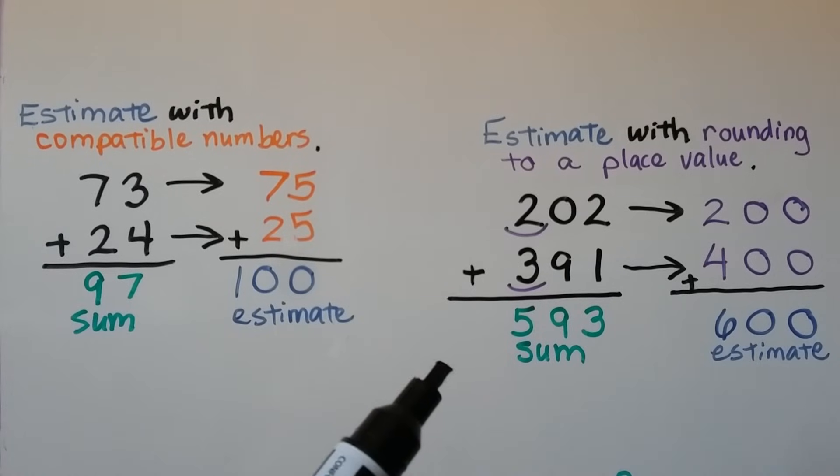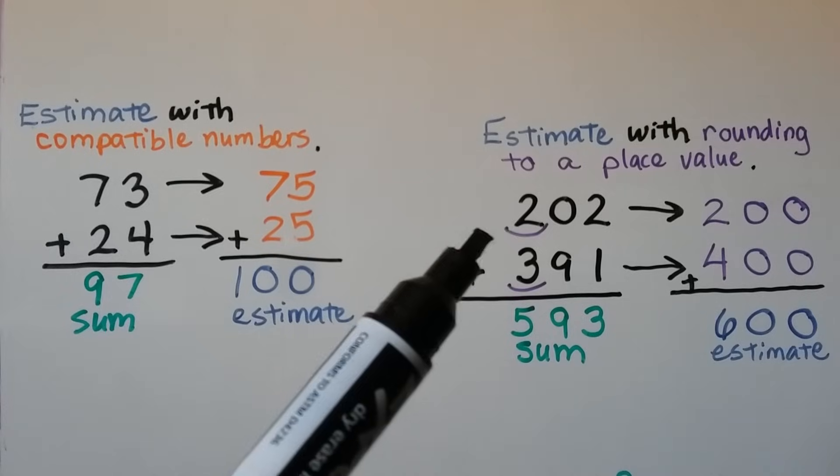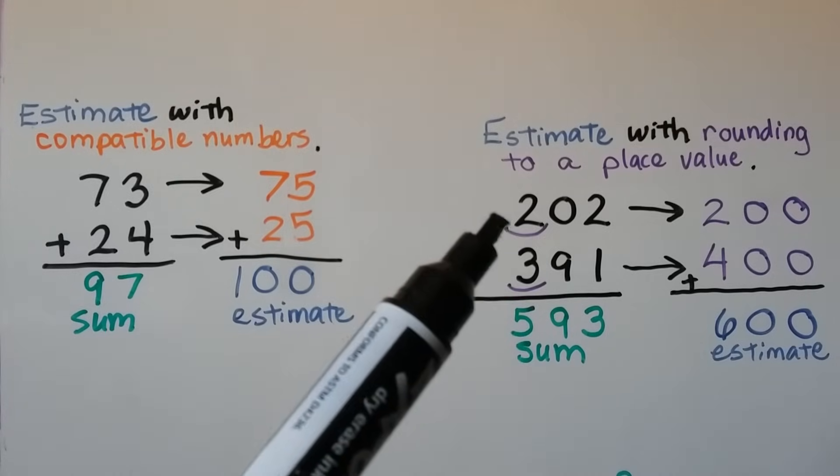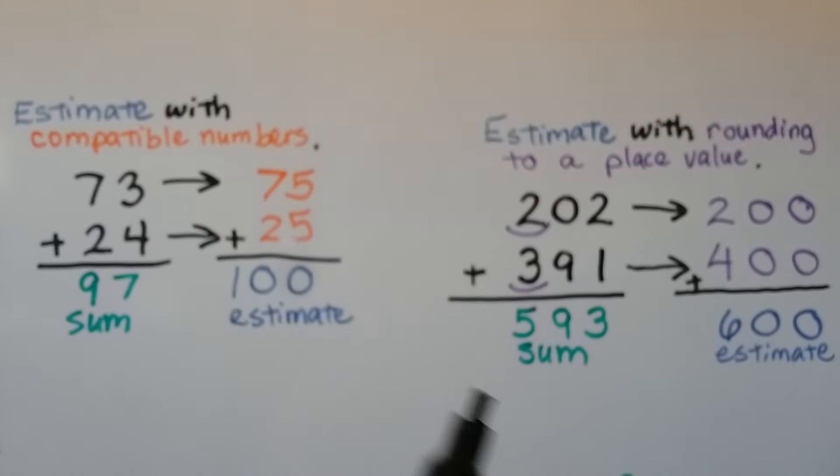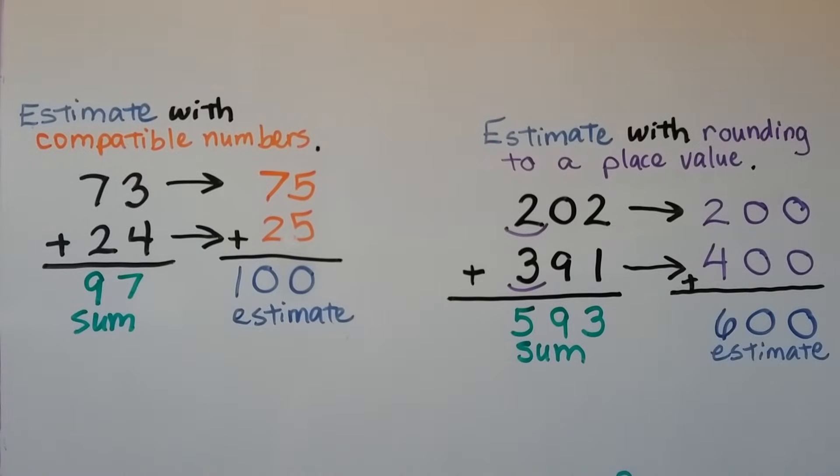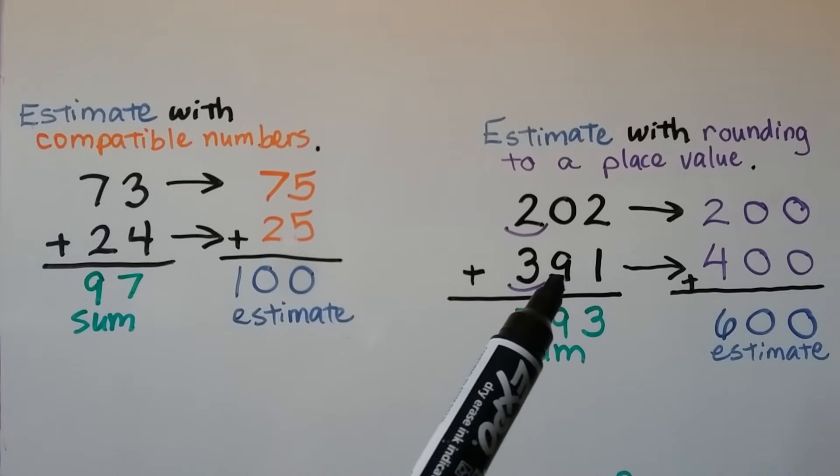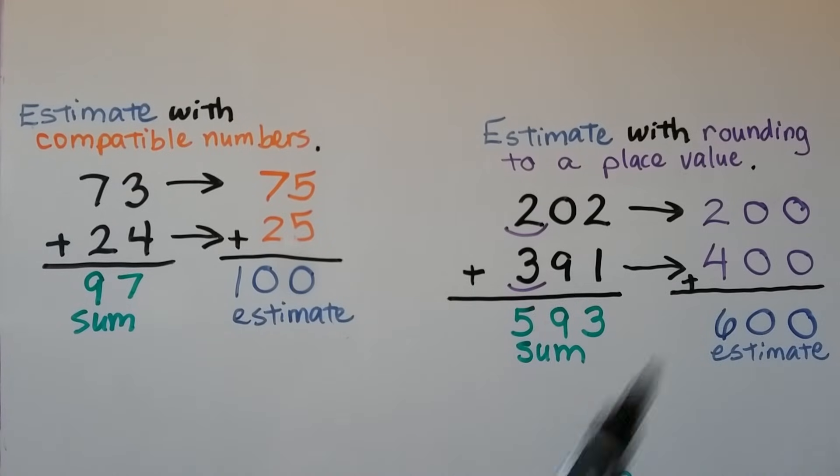We can estimate with rounding to a place value. If we round to the nearest 100, this 0 tells the 2 to stay the same, and then all the numbers to the right become zeros. So that rounds to 200. This 9 tells the 3 to go up to a 4, and then they become zeros. So we have 400. And 200 plus 400 is 600. And that would be our estimate. The actual sum would be 593. That's very close to 600.